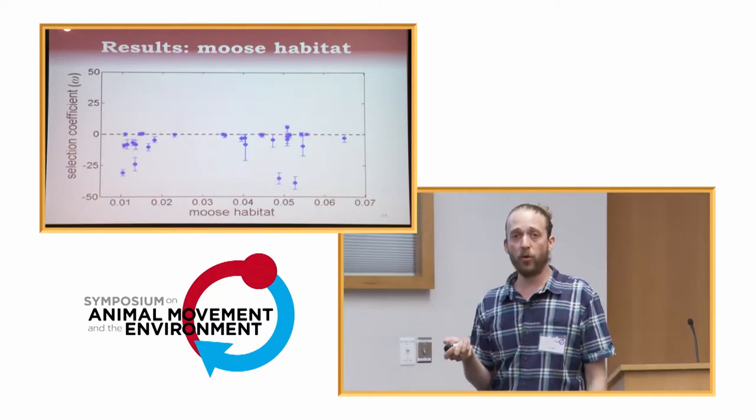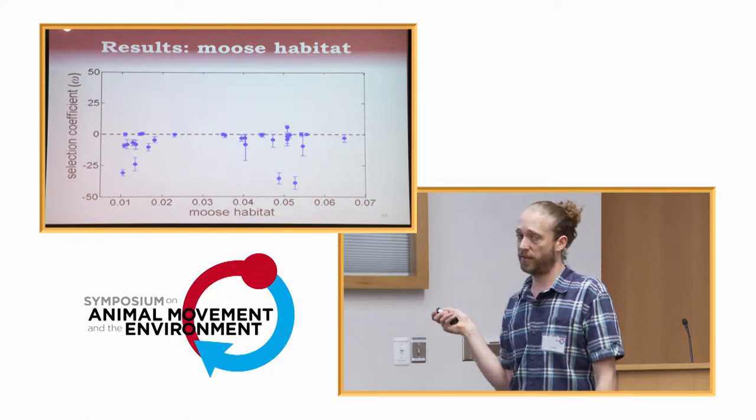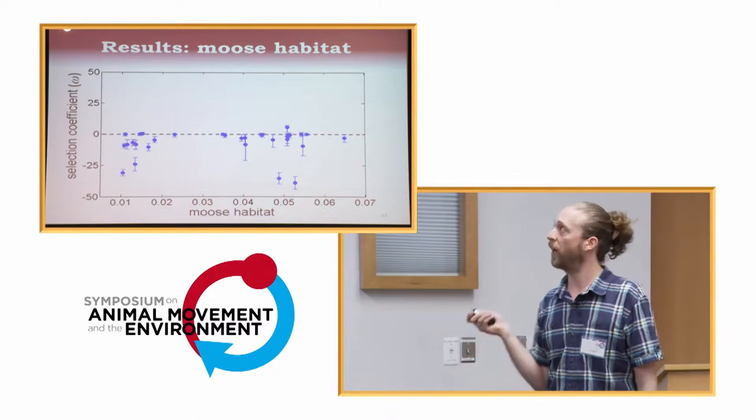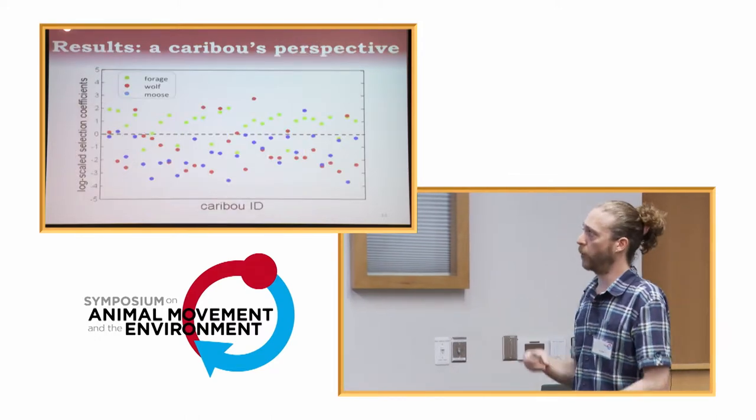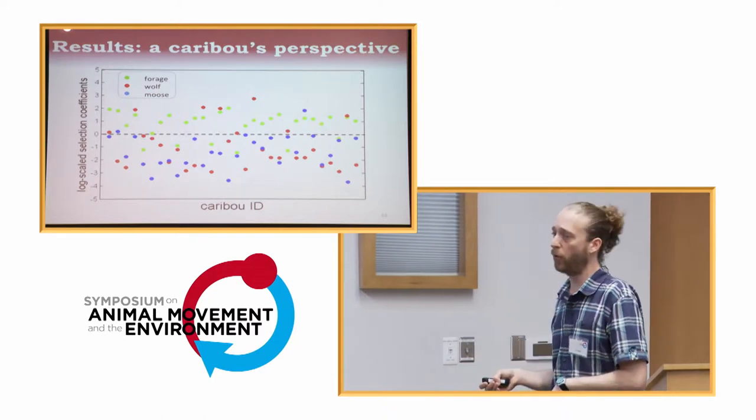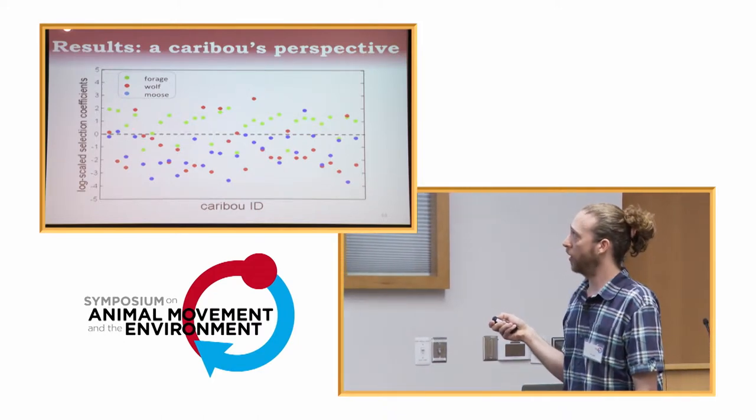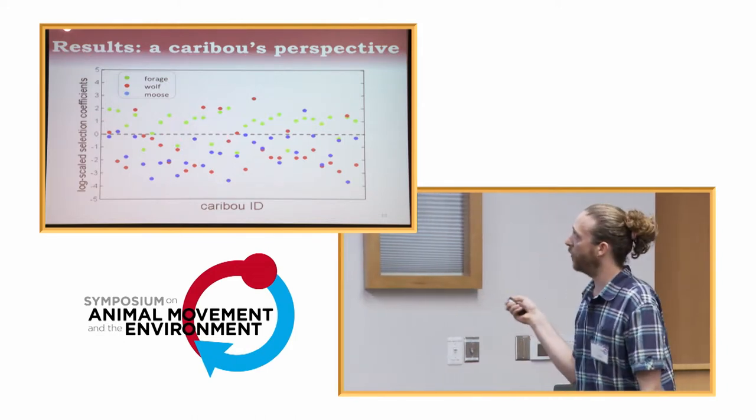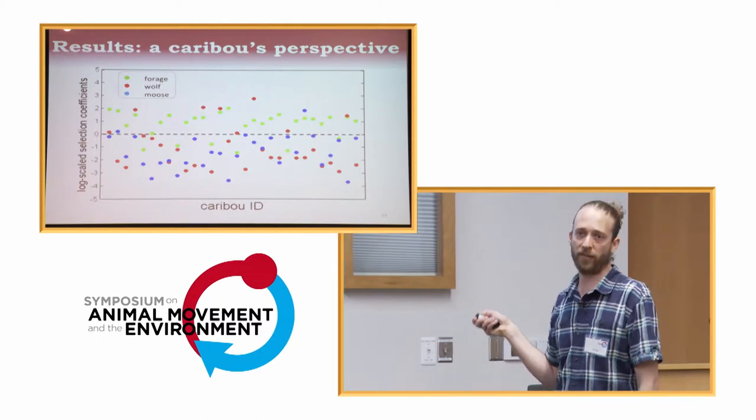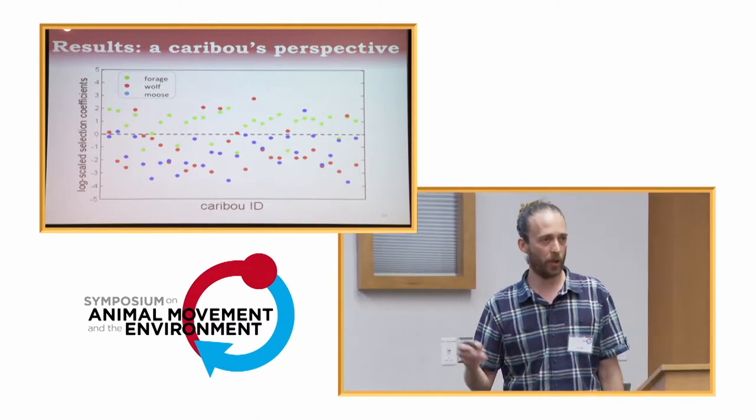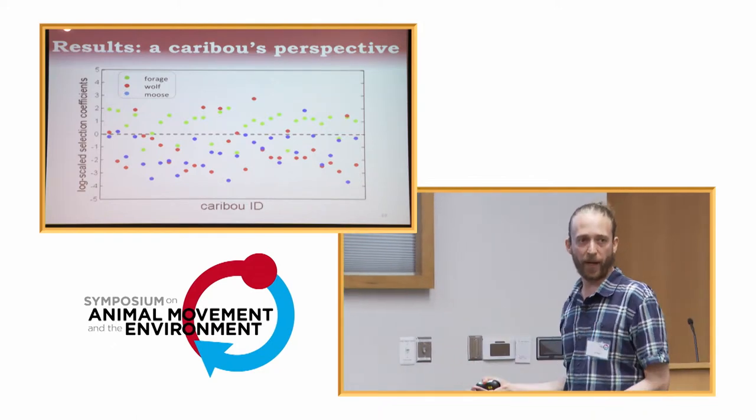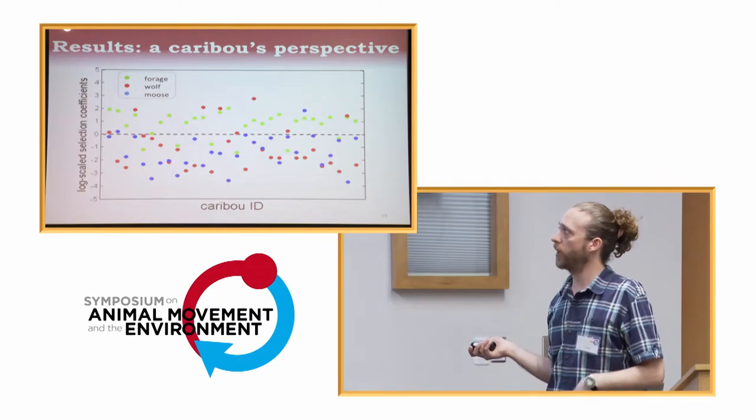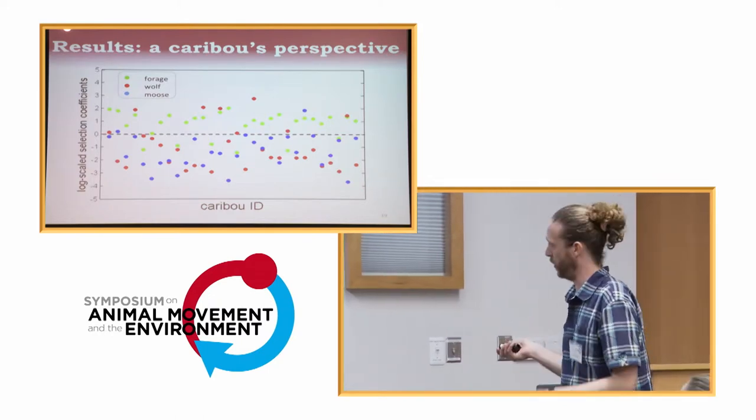And finally, for moose habitat, we have, in this case, about half of our individuals are actively avoiding moose habitat. And the other half are indifferent. And if we want to look at this as the whole scheme of all three variables that we put in here, this is just without the confidence bands. You can see the overall population trends. We have avoidance of predation risk through these two variables. And we have selection for abundant forage. So basically, what we would expect in terms of what we expected to see, what the effects of these ecological factors.